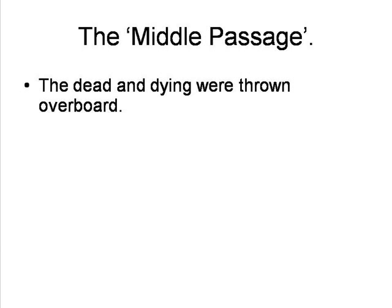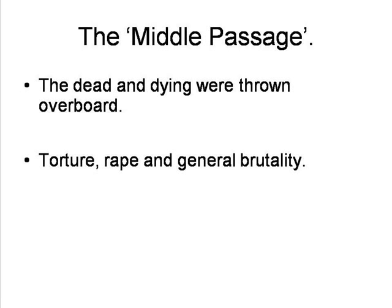Overcome with despair and fear of what awaited them, some took their own lives. Dead and dying slaves were thrown overboard, and slave ships were apparently often followed by sharks. All stages of this process were marked by often extreme brutality. Resistance and attempts at escape were common, so those who were newly enslaved were usually tightly bound and chained. Those who would not comply were whipped, beaten, or otherwise tortured.